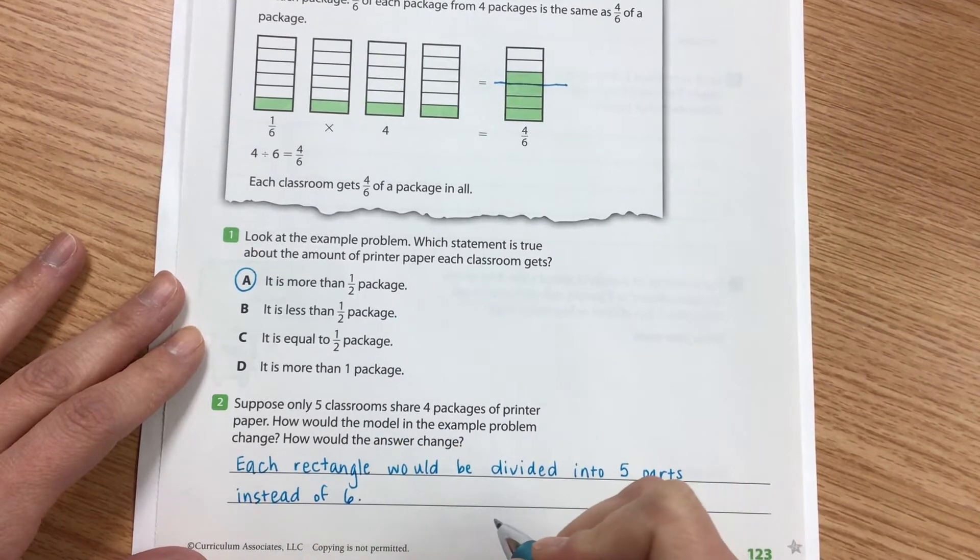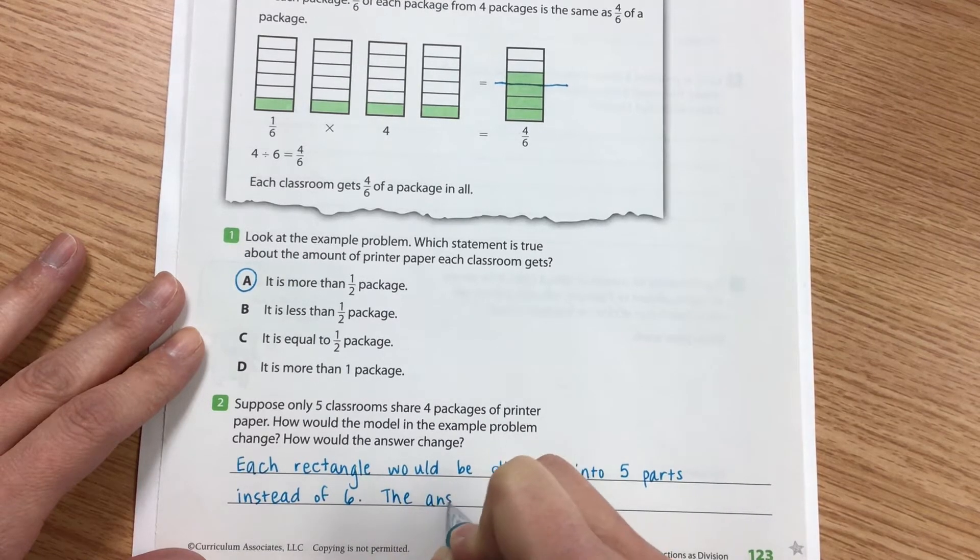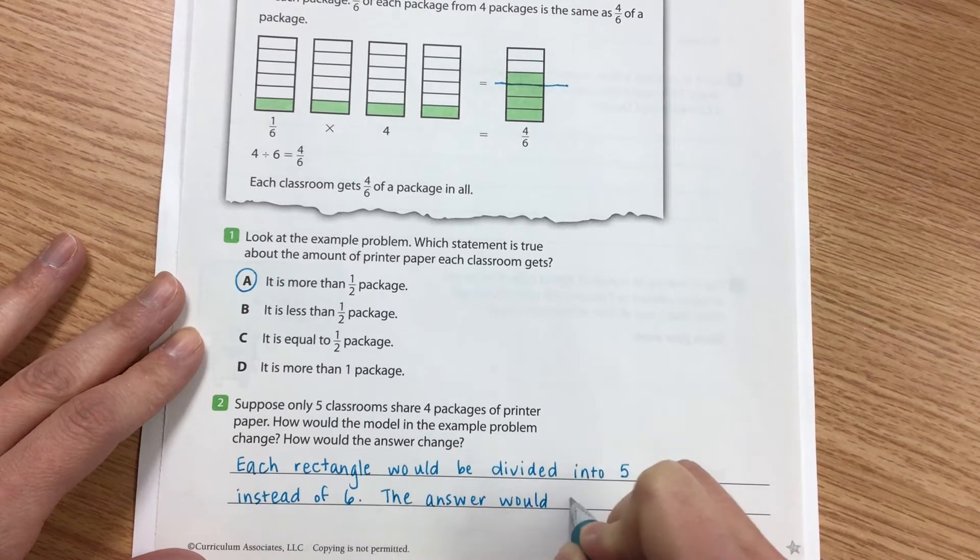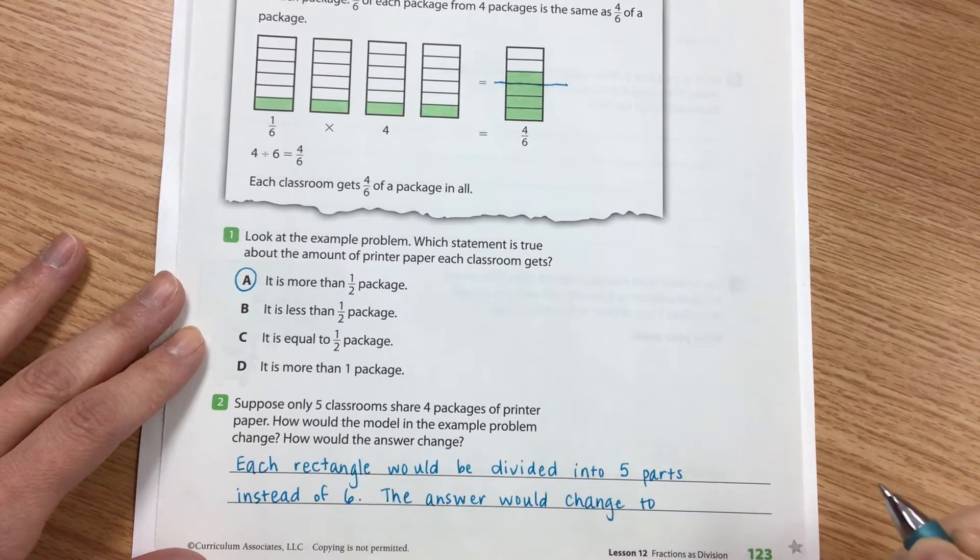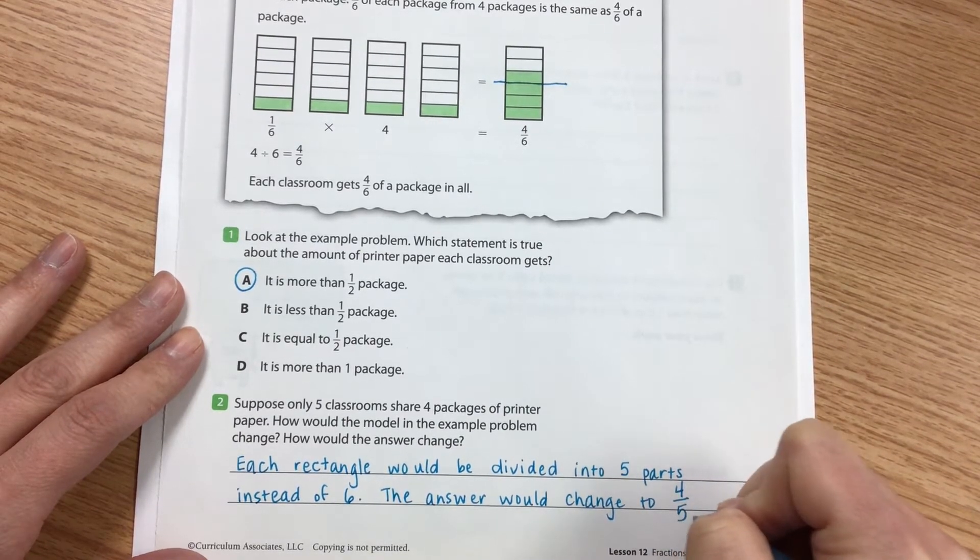And so then the answer would change as well. It would be instead of four over six, it would be four over five.